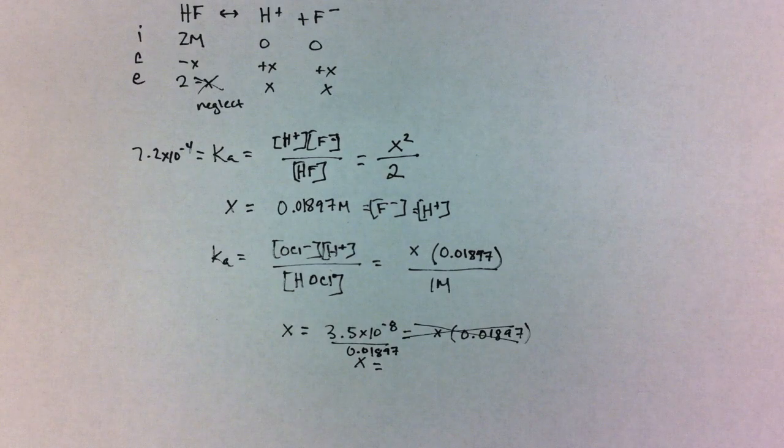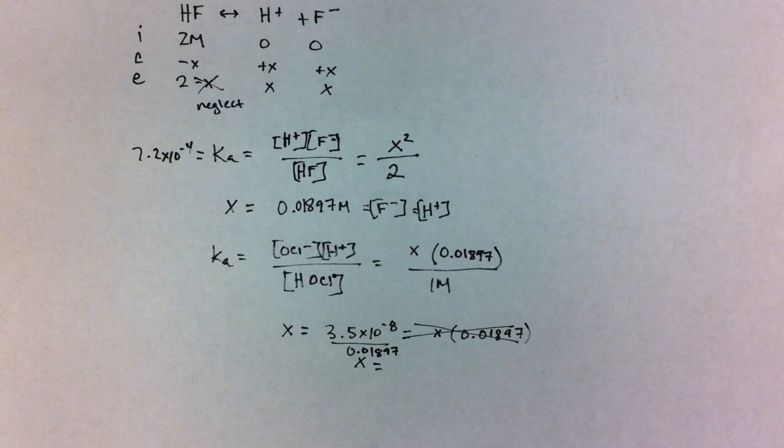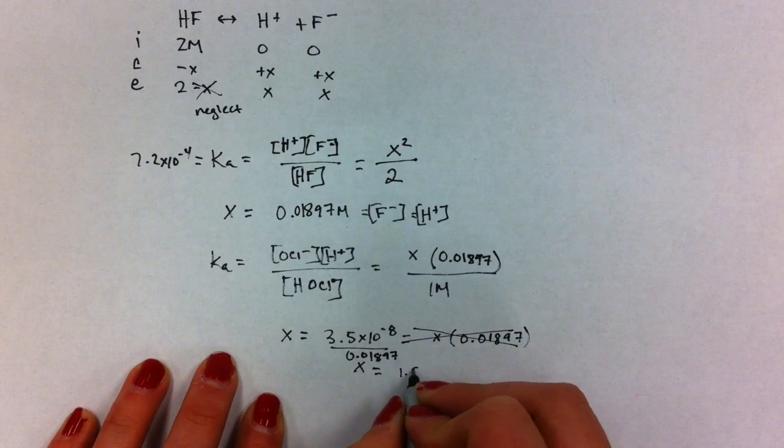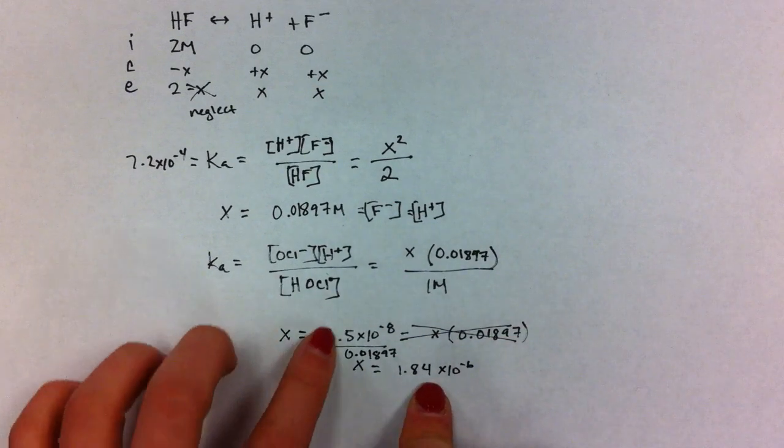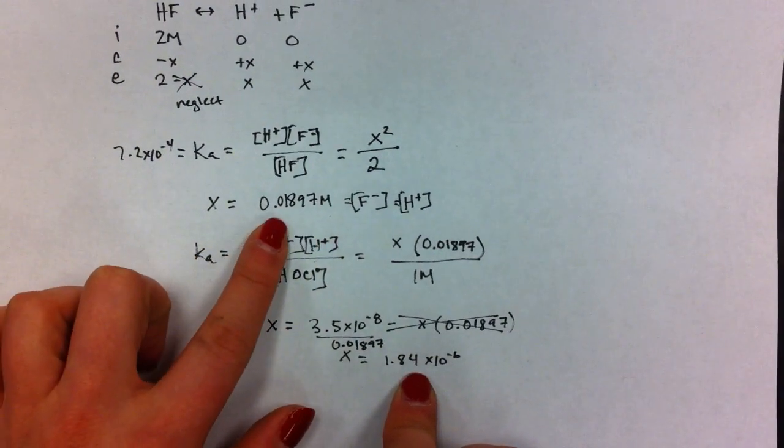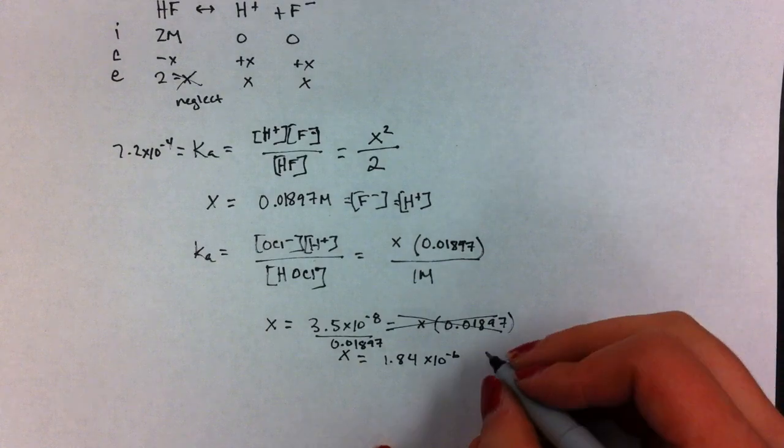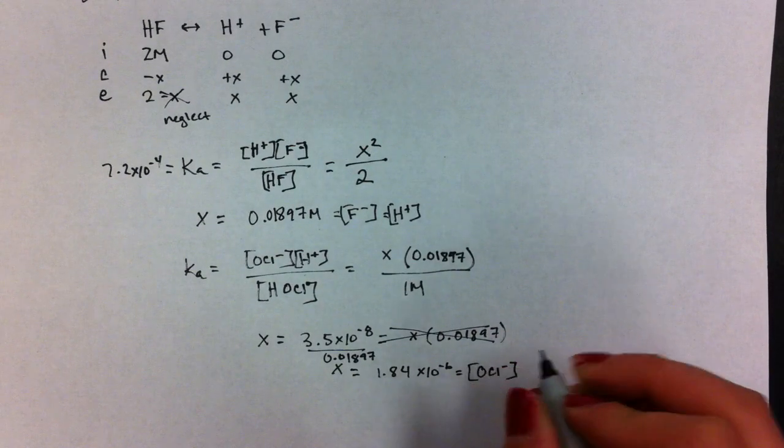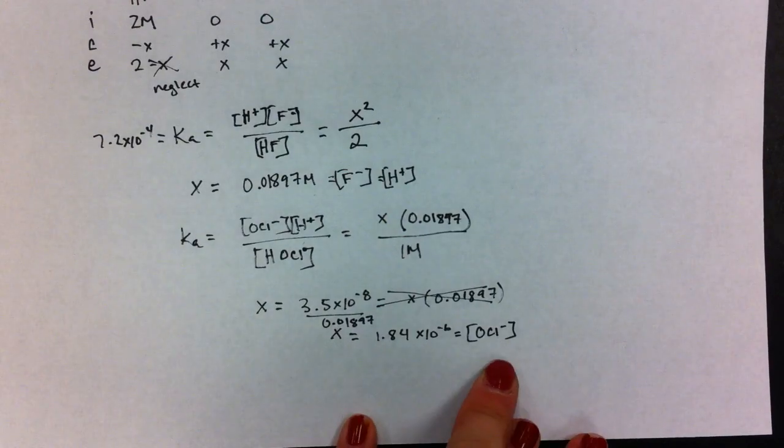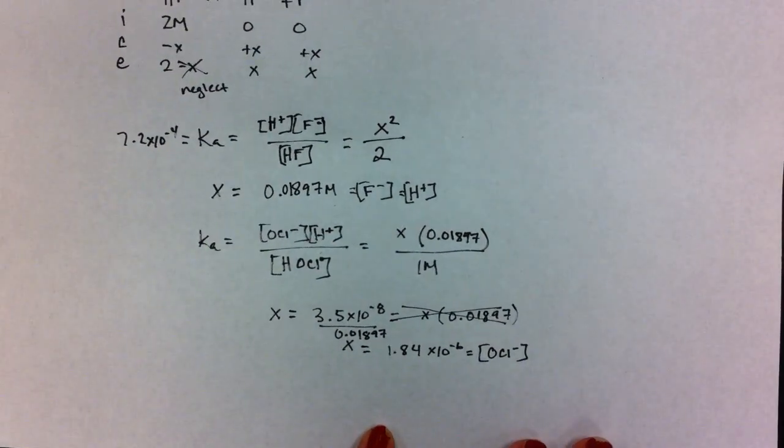X equals 1.84 times 10 to the negative sixth. This number is much smaller than one molar, so it was a good assumption to assume less than 5%. This is the concentration of OCl-. It would contribute to H+, but we neglected it. Okay, thanks.